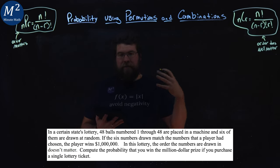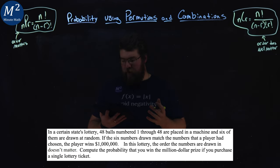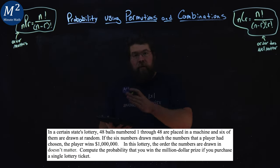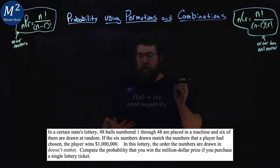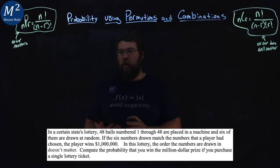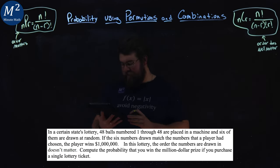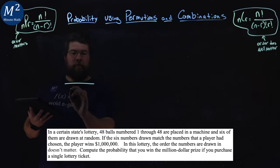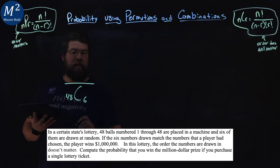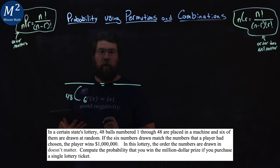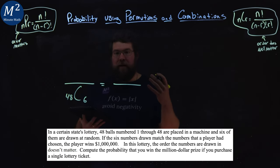There's 48 different balls that we can pick from, numbered 1 through 48, and we get six of them correct. So how many different ways can we choose 48 balls? We have 48 balls and we have to choose six of them. And that gives us the denominator here, the total outcome, the total number of combinations that we have.